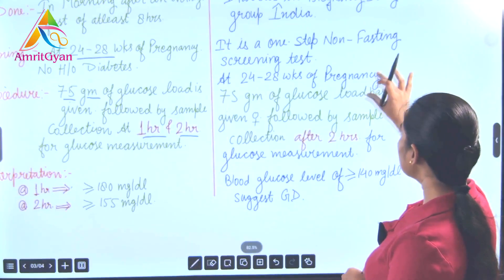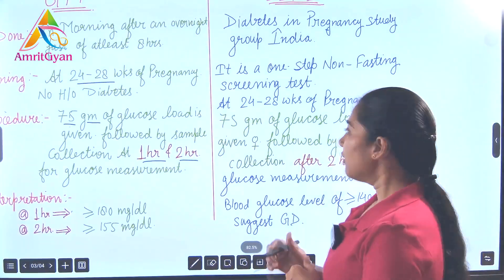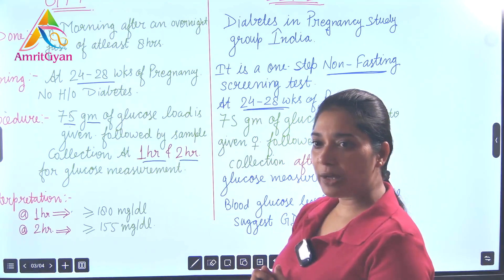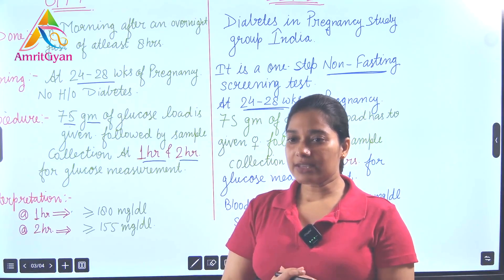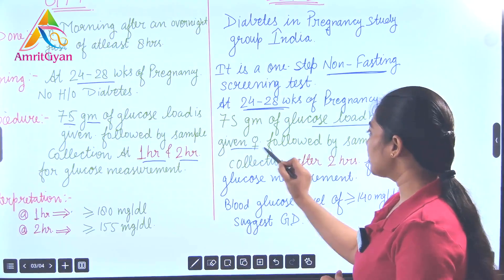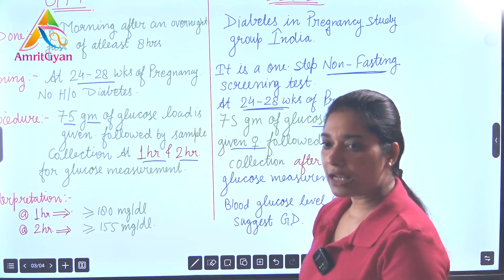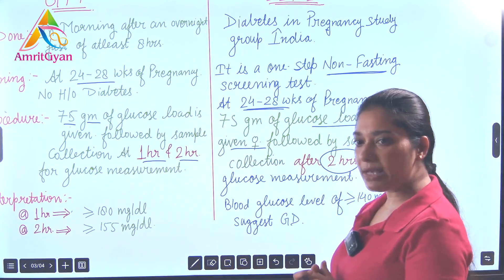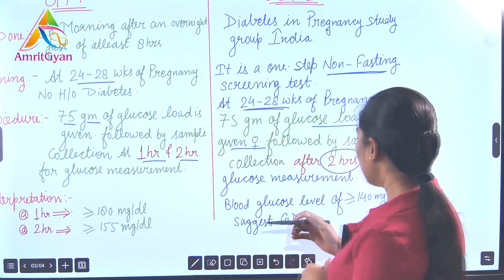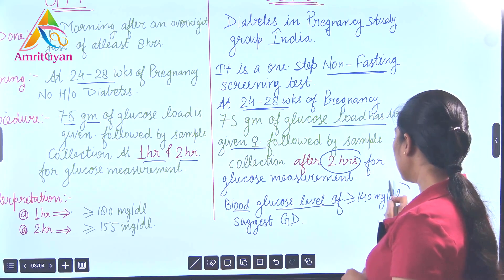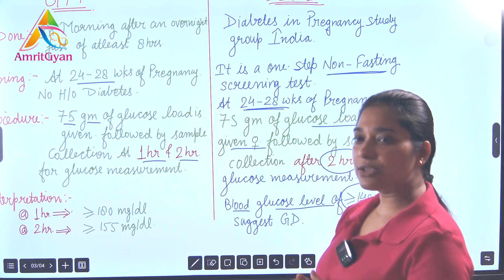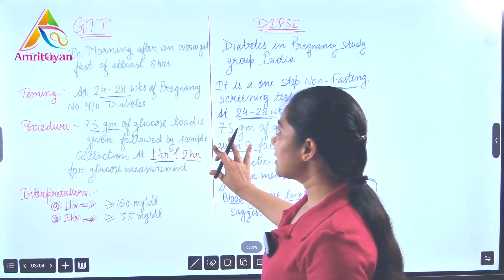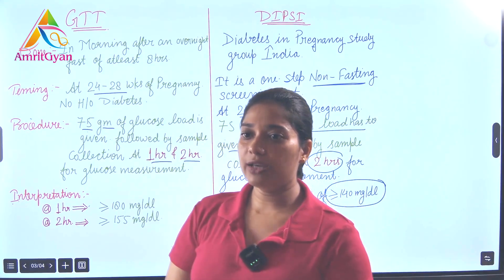In DIPSI, it is a one-step procedure and there is no need for fasting — it is a non-fasting screening test. It is also done at 24 to 28 weeks of pregnancy. A 75-gram glucose load is given to the female, followed by collection of a blood sample after 2 hours. If the blood glucose level is more than 140 mg/dL, it suggests gestational diabetes mellitus. These two are the screening tests for gestational diabetes mellitus at antenatal visits.